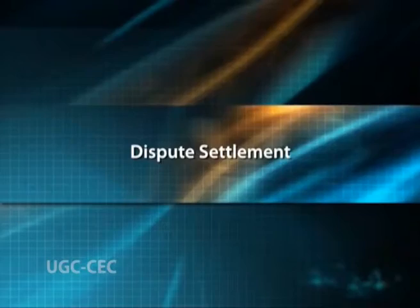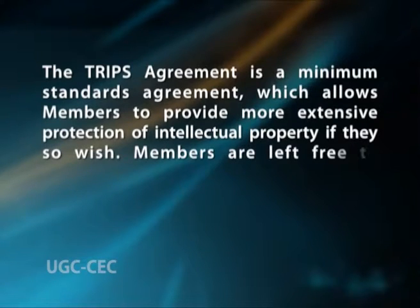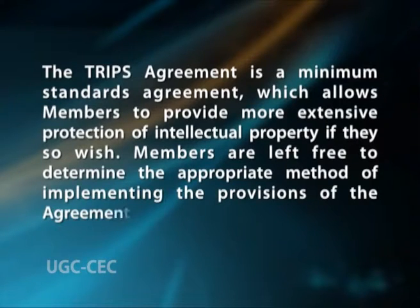The second main set of TRIPS provisions deals with domestic procedures and remedies for enforcement of intellectual property rights. It contains provisions on civil and administrative procedures and remedies, provisional measures, special requirements related to border measures and criminal procedures, specifying the procedures and remedies that must be available so that right holders can effectively enforce their rights. Disputes between WTO members about TRIPS obligations are subject to the WTO's dispute settlement procedures. TRIPS is a minimum standards agreement allowing members to provide more extensive protection if they wish.